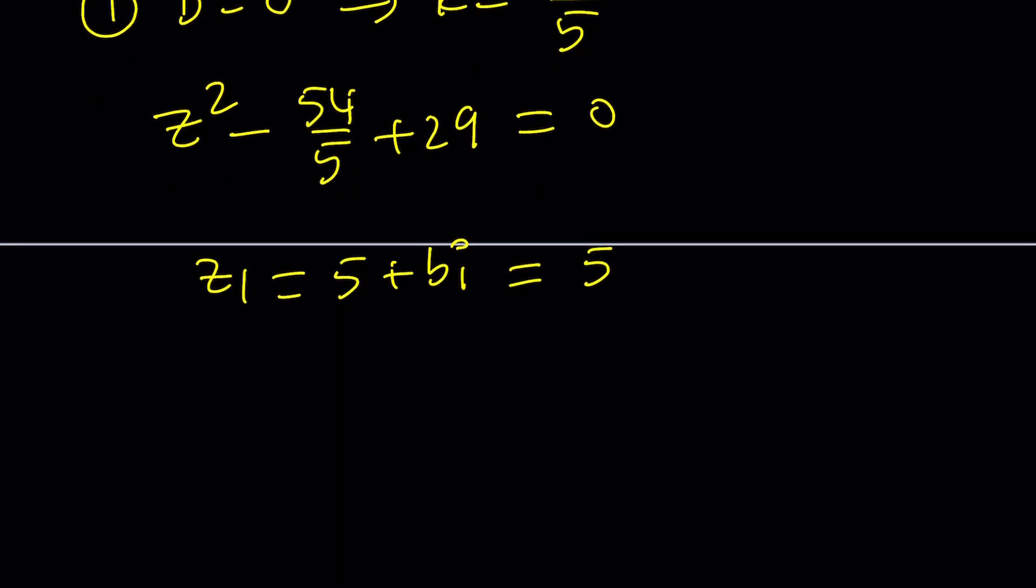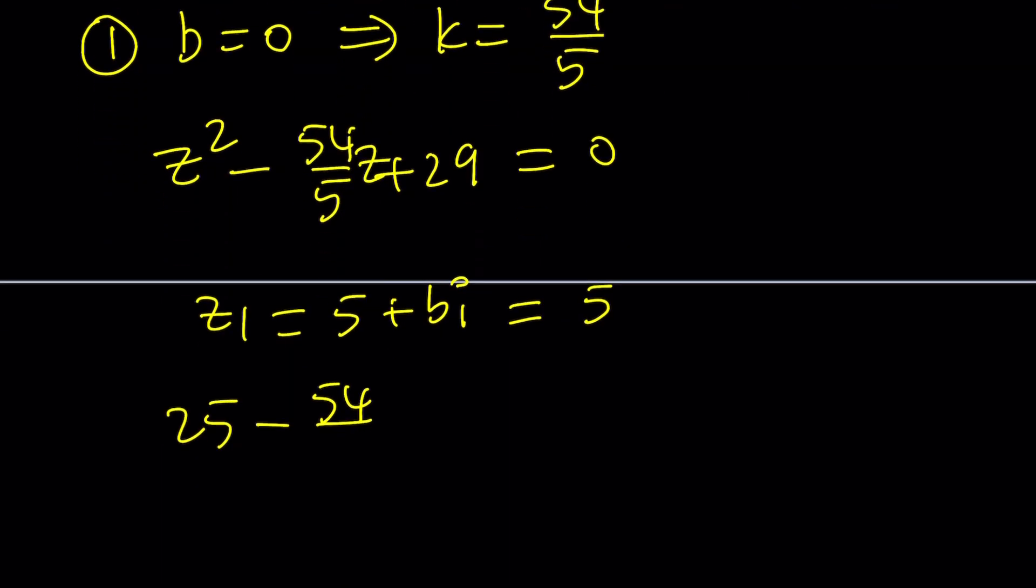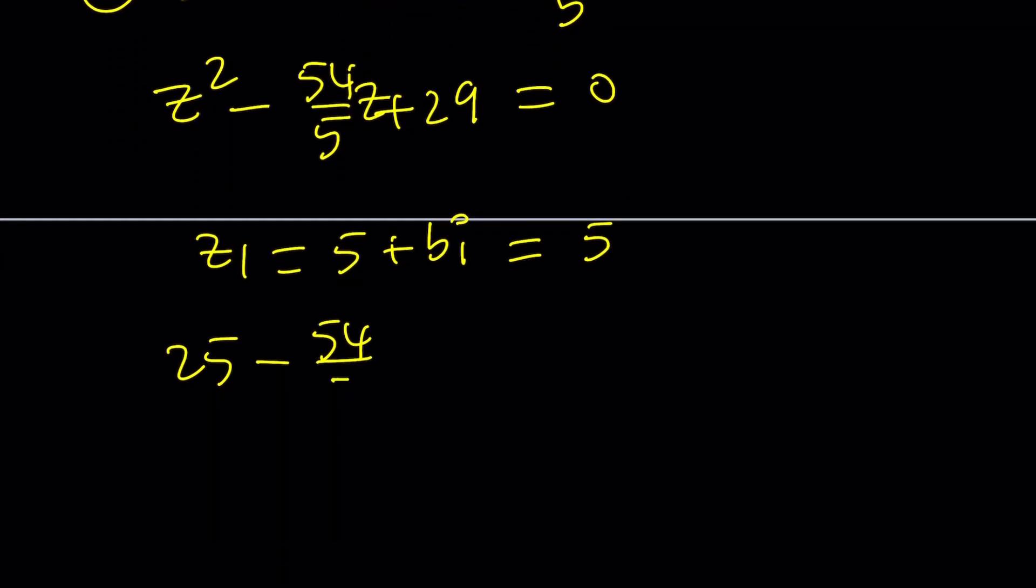Now, b is 0. So that means z sub 1 is equal to 5. And the question is, is 5 a solution to this equation? Let's go ahead and plug it in. If z sub 1 is equal to 5, it should satisfy this. 25 minus 54 over 5 times 5 plus 29. The 5 cancels out. 25 plus 29 is equal to 54 minus 54. That should equal 0. So yes, z sub 1 equals 5 satisfies this equation. But what about the other solution? Let's go ahead and take a look at the other solution.